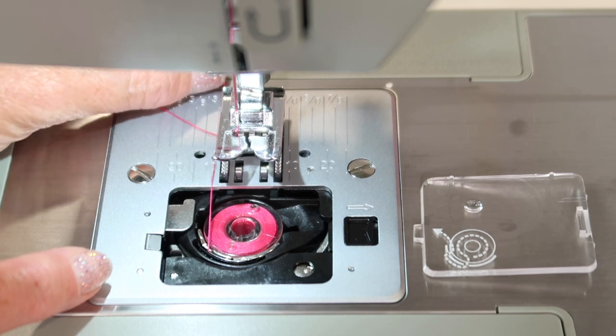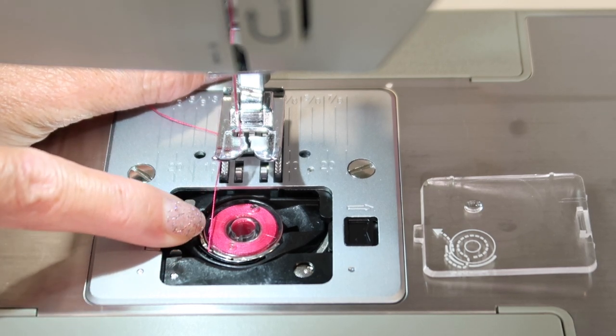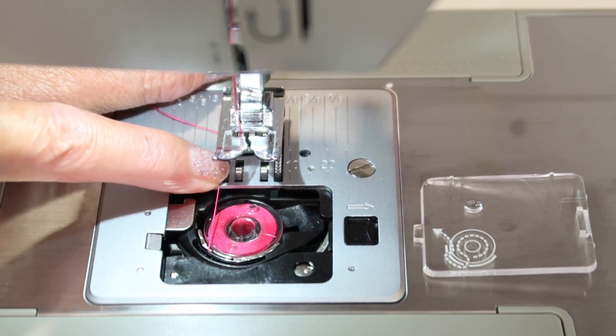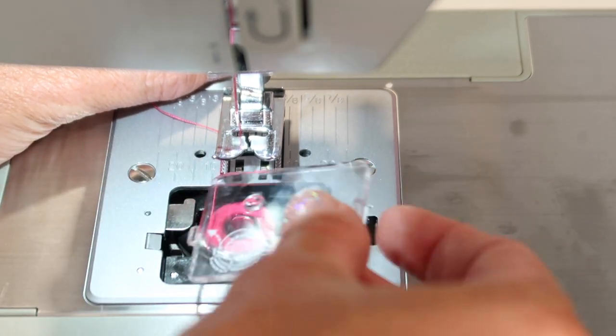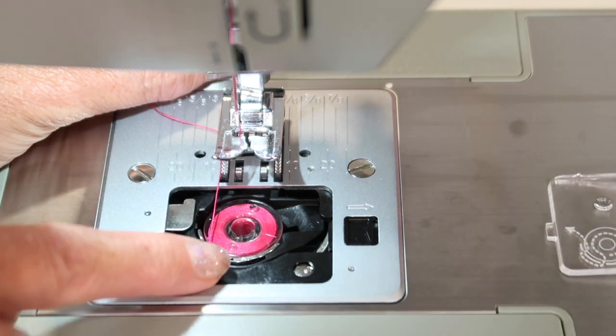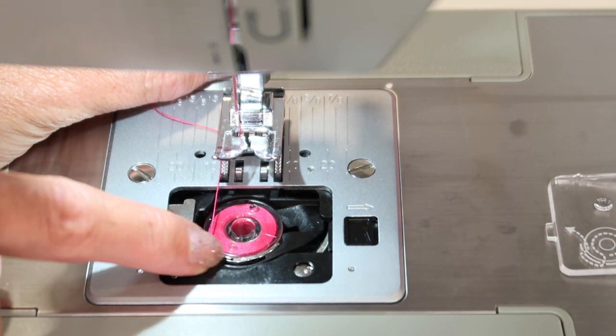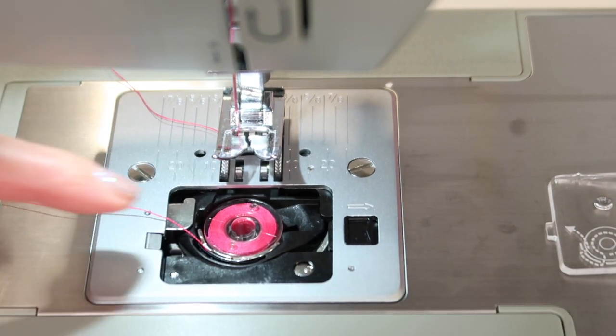When it actually sits correctly, the thread crosses over the bobbin and then goes underneath the throat plate. Even at a glance when that door is on, you can see if your thread is sitting in that bobbin area. Do remember...